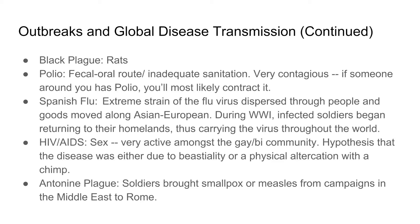HIV/AIDS is transmitted primarily through sexual contact and is very prevalent amongst the gay and bisexual community. The hypothesis is that the disease originated either through contact with a chimpanzee — someone was either cut by a monkey or came into physical contact with one. The Antonine Plague: soldiers brought smallpox or measles from campaigns in the Middle East back to Rome.